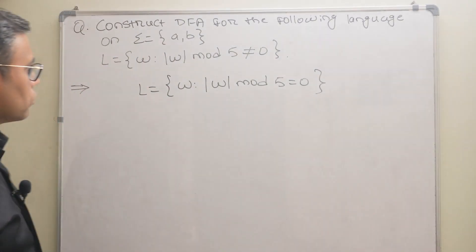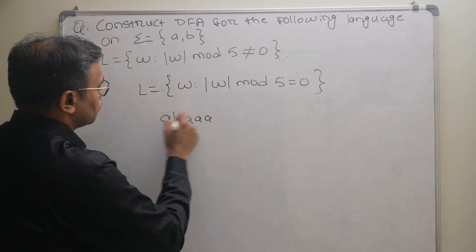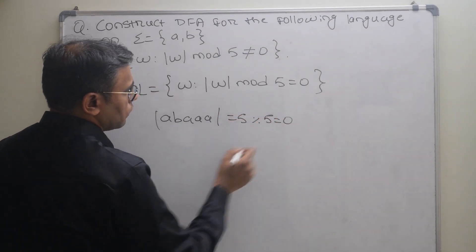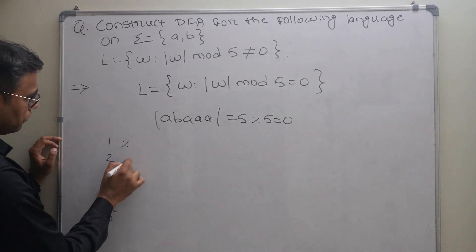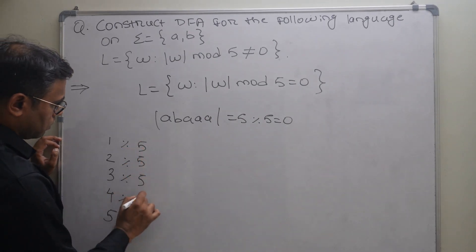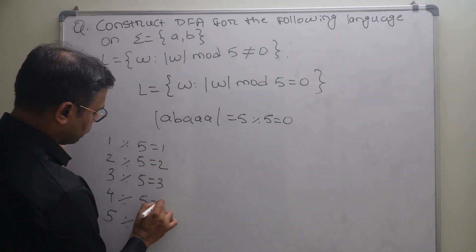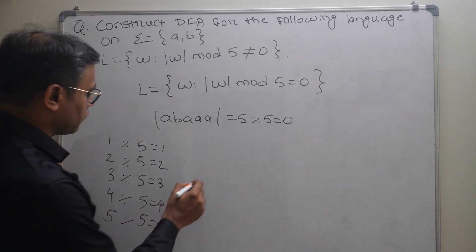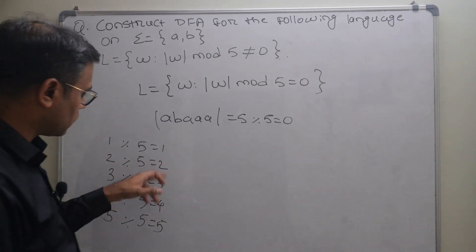If we take the string abaaa, its length is 5, and 5 mod 5 equals 0. There are actually 5 values for mod 5, which are 0, 1, 2, 3, and 4. So there will be 5 states. Remember, if there are 3 values, there will be 3 states; here there will be 5 states.